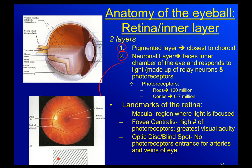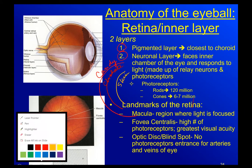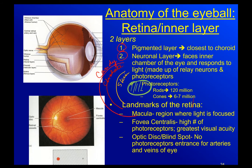Let's go back to our M&M analogy. We had the candy, the chocolate, the skin of the peanut, and the peanut itself. The pigmented layer of the retina is going to be the layer closest to the middle layer, the choroid. The neuronal layer is closest to the inner chamber of the eye.